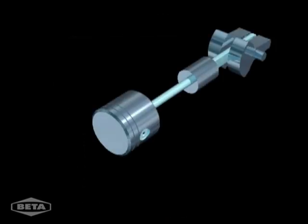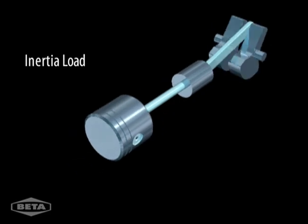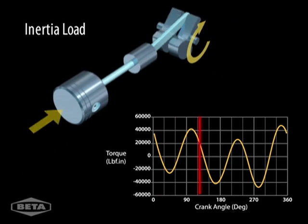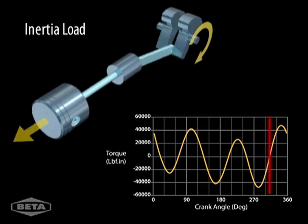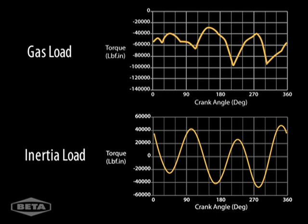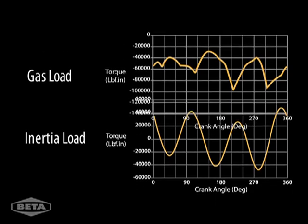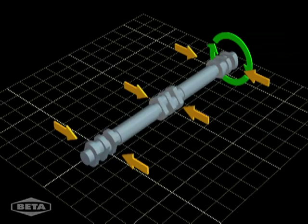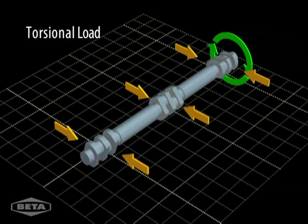Another important load is the inertial load due to the weight of the piston assembly. The inertial load for all cylinders also varies widely over each revolution. By adding together the gas load and the inertial load, we find the combined torsional load for all cylinders.